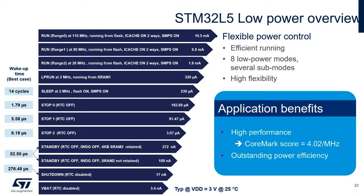For the maximum system frequency of 110 MHz, the consumption is at a level of 10.5 mA. It is possible to reduce the system clock — for 80 MHz and 26 MHz, the consumption is 6.8 mA and 1.8 mA respectively.